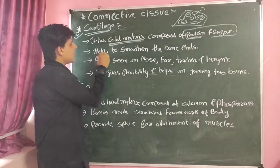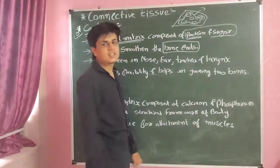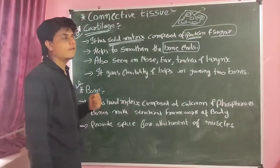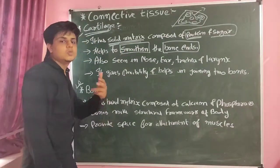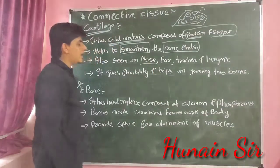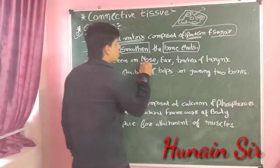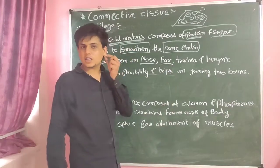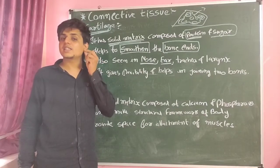Cartilage helps to smoothen the bone ends — it is present on the ends of bones. It is also seen in the nose and in the ear. The pinna of your ear is made of cartilage. You can say this solid matrix structure is also called cartilage — it is also a connective tissue.